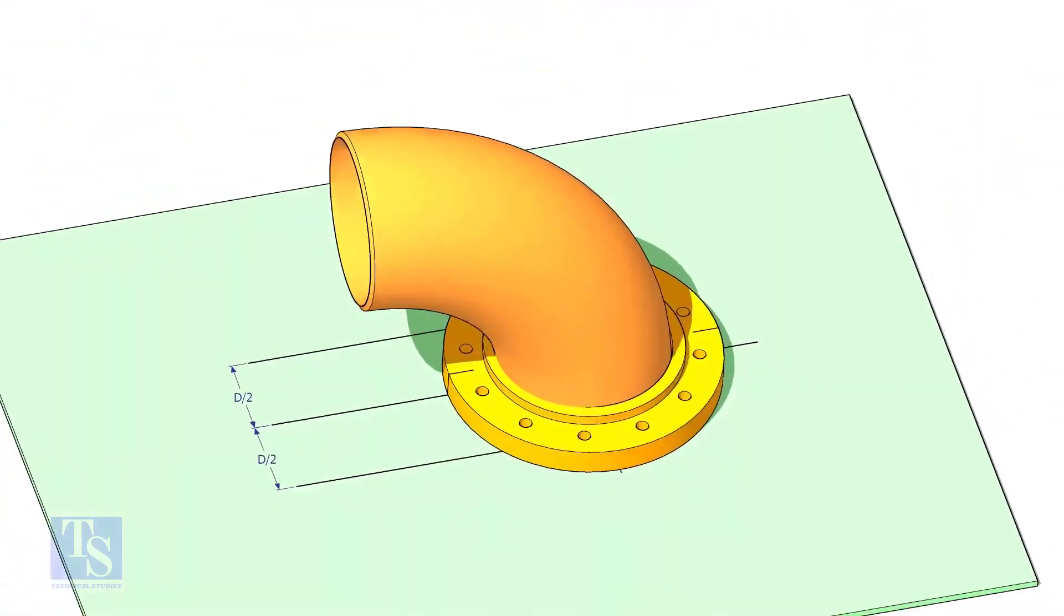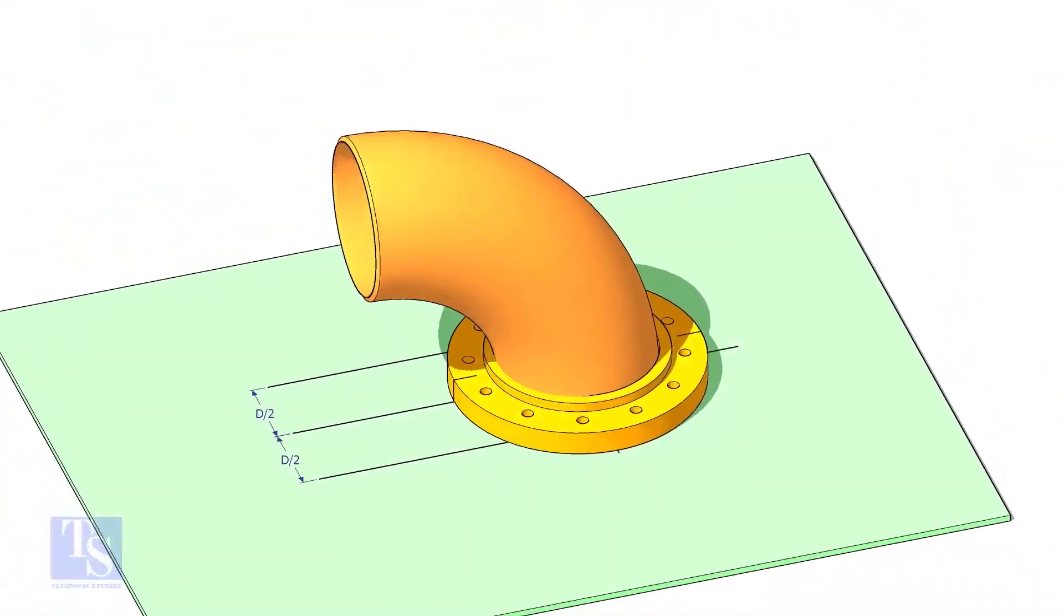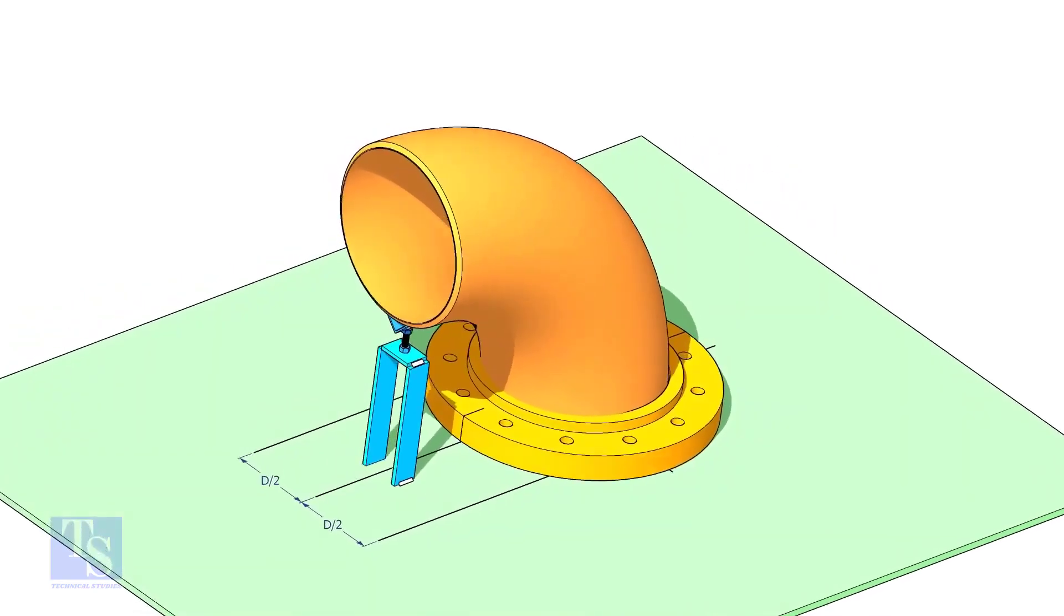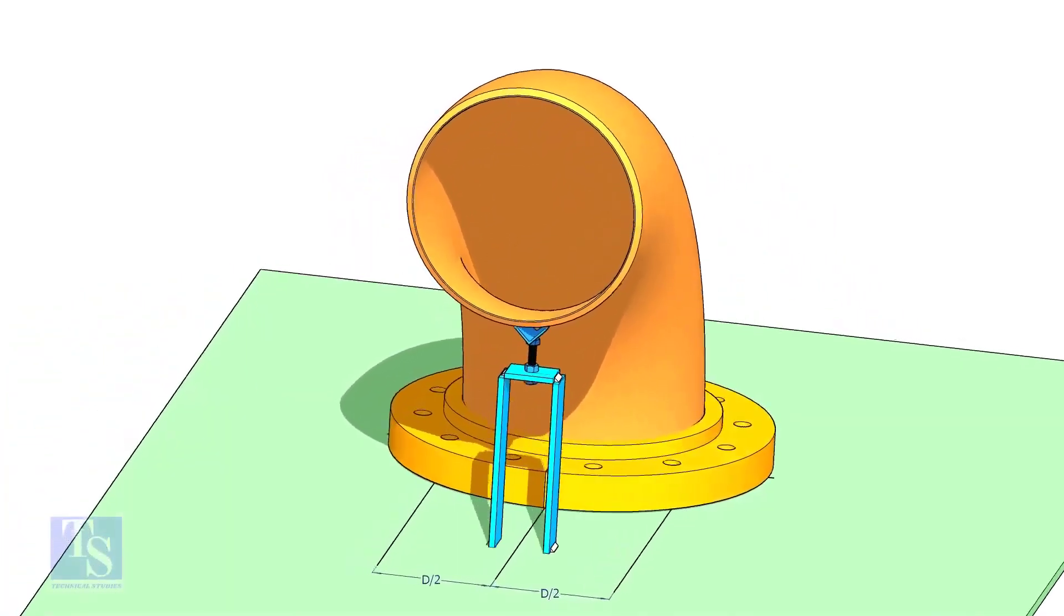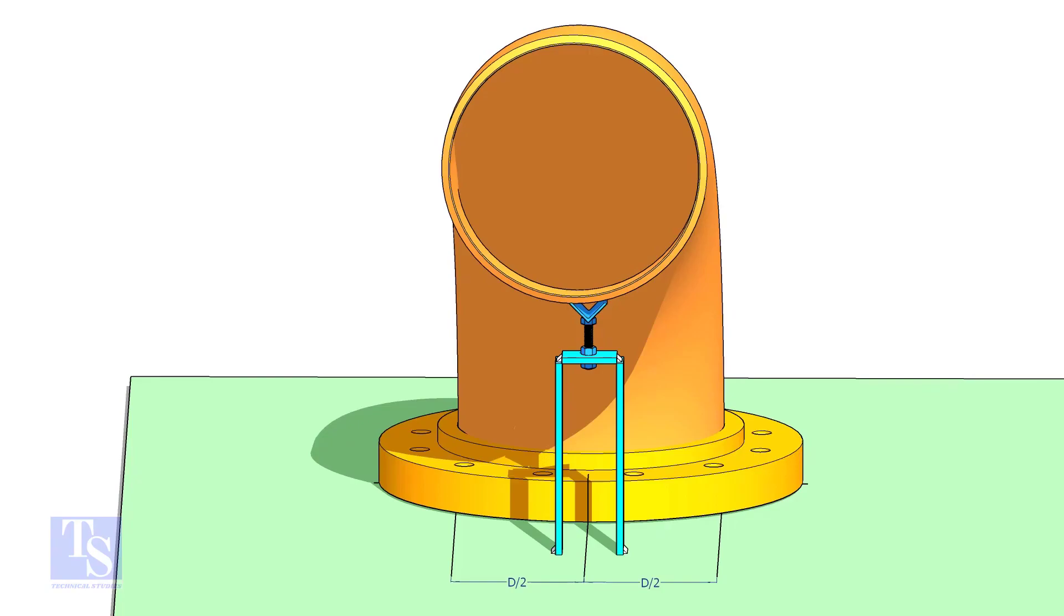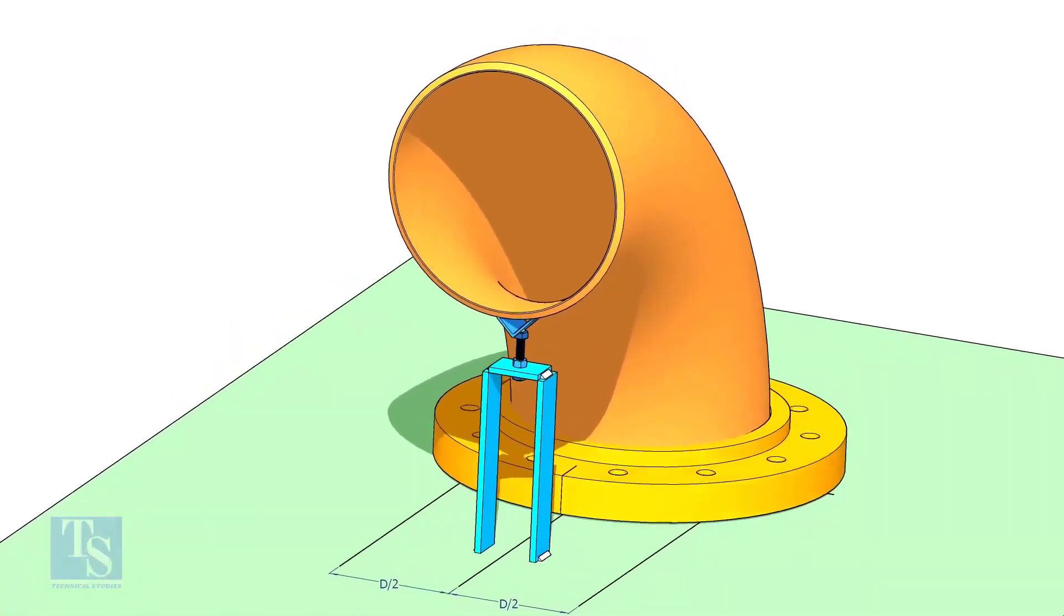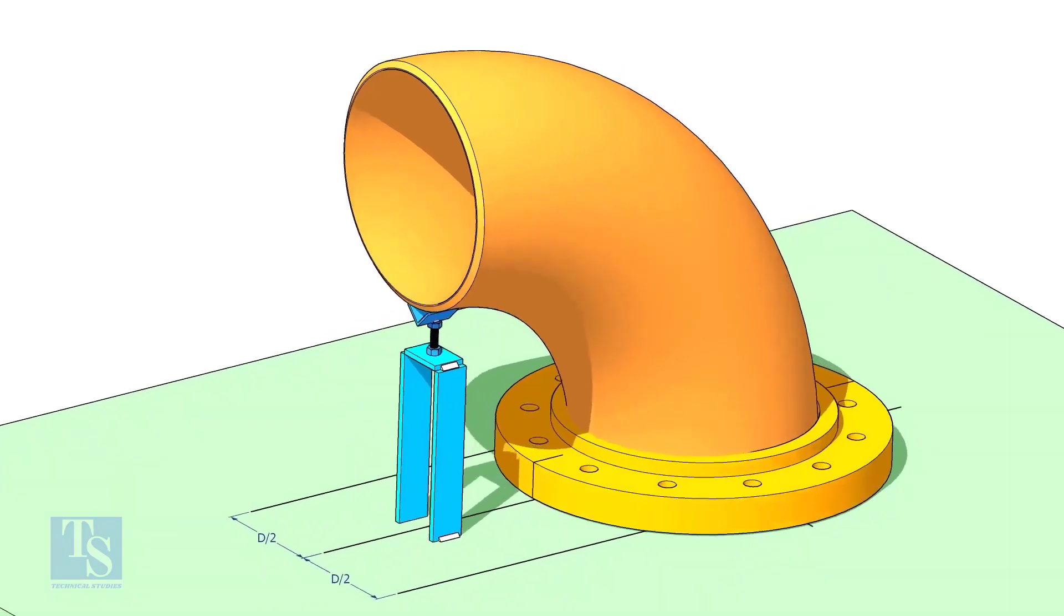Put the elbow in the flange. If required, tack weld the screw jack below the elbow face as shown. Adjust the height of the bolt and level the face of the reducer.